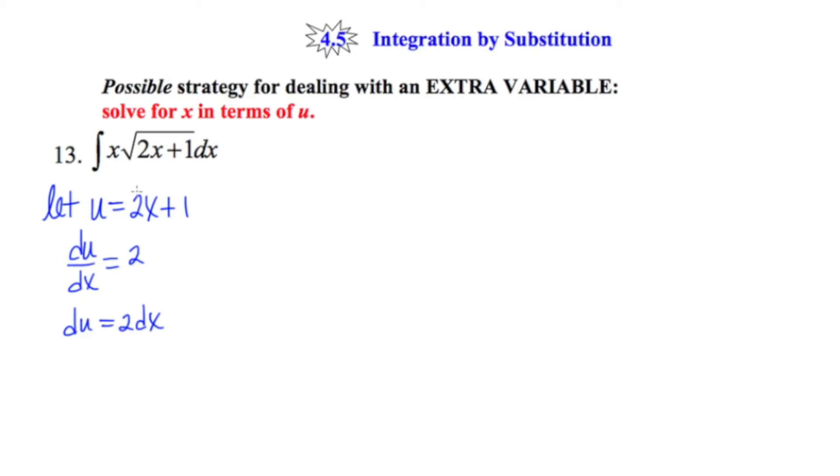and then realizing that there's no 2 in our integrand, I'm going to divide both sides by 2, giving me 1 half du equals dx.